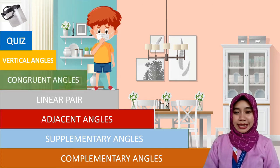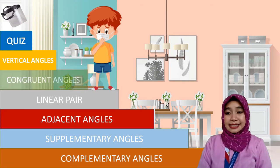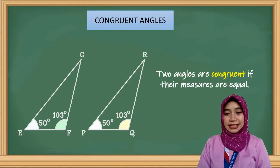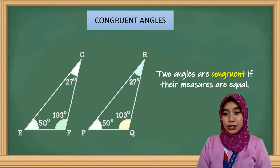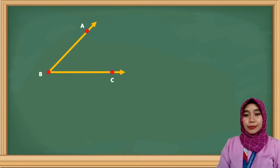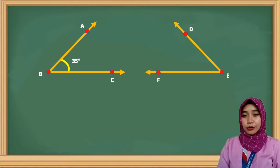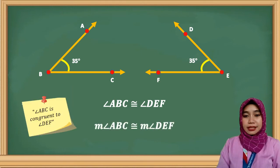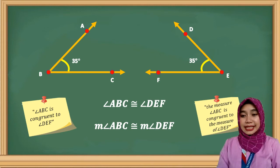Now let's proceed to congruent angles. Two angles are congruent if their measures are equal. For example, we have angle ABC with a measure of 35 degrees, and angle DEF with the same measure of 35 degrees. Hence, we can conclude that angle ABC is congruent to angle DEF, and the measure of angle ABC equals the measure of angle DEF.